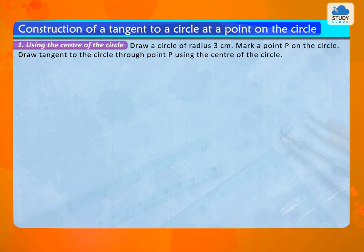Example: Draw a circle of radius 3 cm. Mark a point P on the circle. Draw tangent to the circle through point P using the center of the circle.